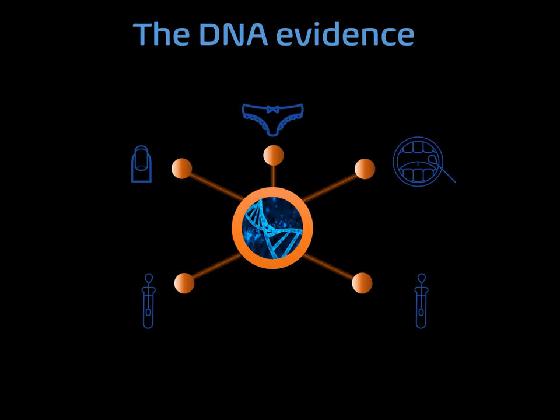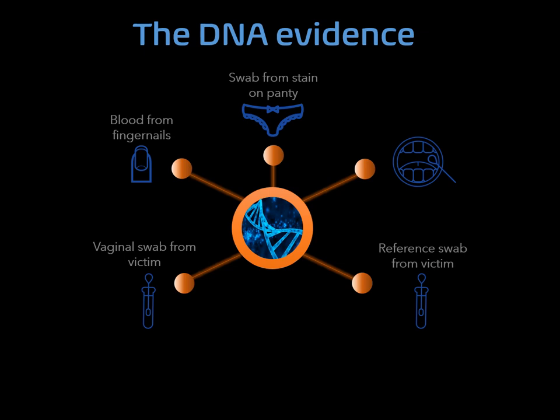Now, back to our DNA evidence from the crime scene. We managed to obtain two DNA profiles from the stain present on the underwear. From the victim, we obtained DNA profiles for the blood found underneath the fingernails, the vaginal swab, and a reference blood swab. We also obtained a DNA profile using a reference buccal swab from the suspect.